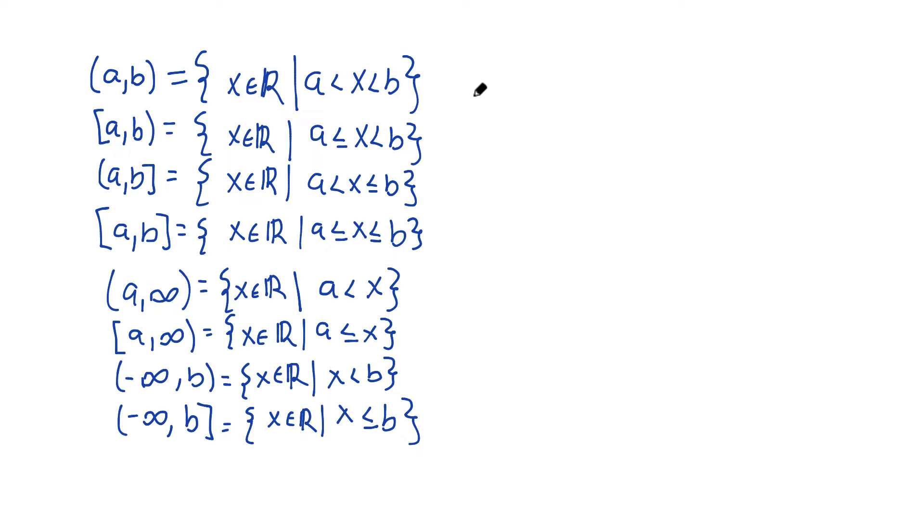You'll see this first one, parentheses A, comma B, parentheses. This is an interval from A to B. The parentheses mean A and B are not included, and this just describes all the numbers in between A and B.